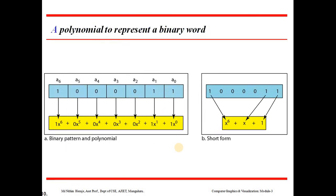Looking at this example, we have bits A0 through A6. The bit values are 1, 1, 0, 0, 0, 0, 0, 1. So we can identify x power 2 and x power 3 terms, and x power 6 since it is the 6th position.